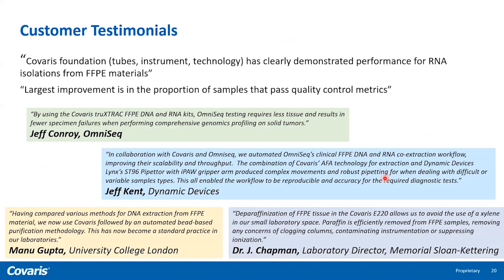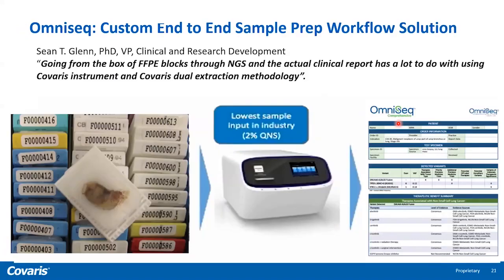Here are some customer testimonials — our customers speak for our technology. A repeating theme from our collaborators is that the largest improvement is in the proportion of samples that pass quality control metrics, enabling samples to enter downstream applications so no sample is left behind. At Covaris's, we are on a mission to reduce variability in sample prep, simplify and accelerate workflow by reducing sample touchpoints.